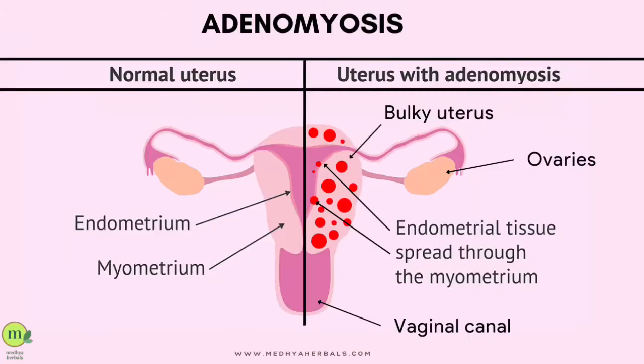In case of adenomyosis and endometriosis, this endometrial lining starts to grow in different parts of the uterus. In adenomyosis, this endometrium starts to penetrate the inner walls of the uterus, making the uterus inflamed and thick. That's why adenomyosis is often termed as a condition of bulky uterus or irregular uterus, because the endometrial cells have penetrated different parts of the uterine walls.